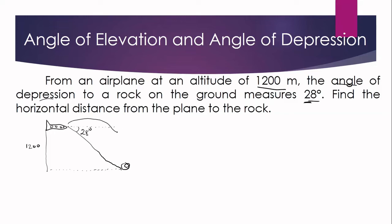We have two distances: the direct distance from the airplane to the rock, or the horizontal distance. Based on the problem, we need the horizontal distance. Now, the horizontal at the observer's level and the ground are parallel, and the line of sight acts as a transversal. Therefore, the angle at the bottom also measures 28 degrees because these are alternate interior angles, which are congruent. We will use the tangent ratio: tangent theta equals opposite over adjacent. The given angle is 28 degrees, the opposite side is the altitude of 1200 meters, and the adjacent side is the unknown horizontal distance x.